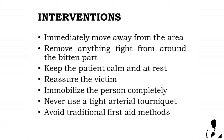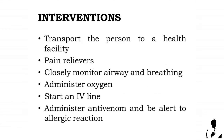Immobilize the person completely. Splint the limb to keep it still. Use a makeshift stretcher to carry the person to a place where transport is available to take them to a health facility. Never use a tight arterial tourniquet. Avoid traditional first aid methods, herbal medicines, and other unproven or unsafe forms of first aid. Transport the person to a health facility as soon as possible. Analgesics may be given for local pain, which can be severe. Vomiting may occur, so place the person on their left side in the recovery position. Monitor airway and breathing and be ready to resuscitate if necessary. Administer oxygen.